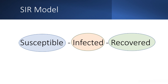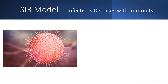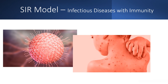Susceptibles, which represents the individuals within the population that are capable of getting the disease. You can also have the infected, which represents the individuals who have been infected with the disease. And lastly, the recovered, which as the name implies, are the individuals who have recovered from the disease. A typical example of a disease you can model with SIR is chickenpox, which after recovery, individuals gain immunity.